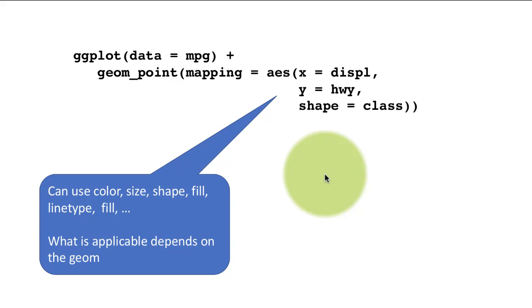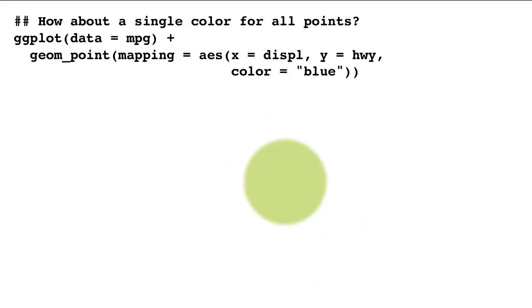If you apply an aesthetic to a geom which is not applicable to the geom, ggplot will just ignore it. It won't throw any error message or anything. It will just ignore it. And maybe I'm thinking it will also give you a warning saying I didn't use this.